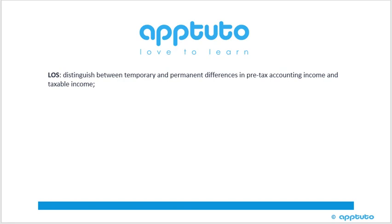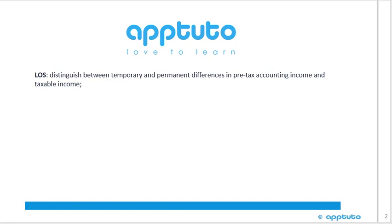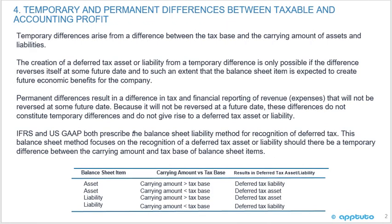This LOS distinguishes between temporary and permanent differences in pre-tax accounting income and taxable income — temporary and permanent differences between taxable and accounting profit.